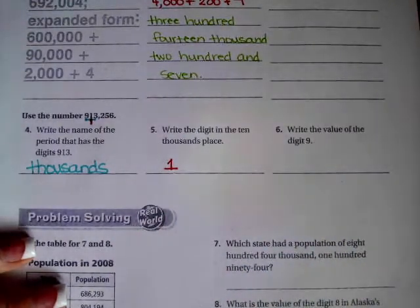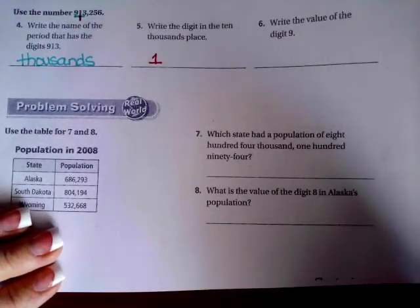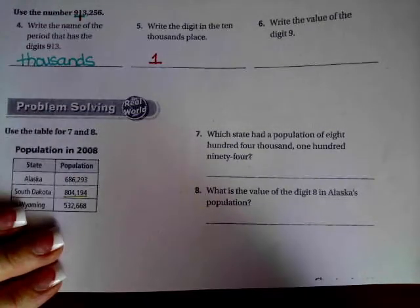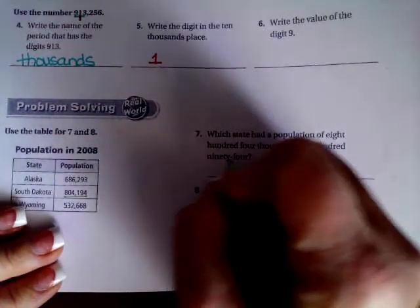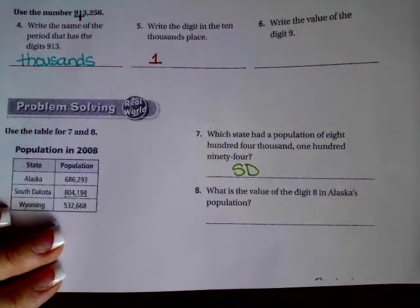We're going to go down to number seven. Number seven says which state had a population of eight hundred four thousand one hundred ninety four. Well, there's only one of them that had those numbers, eight hundred four thousand one hundred ninety four, so we're going to write SD for South Dakota.